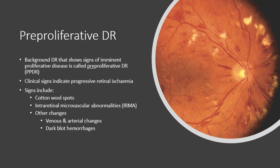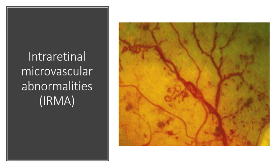We already know about cotton wool spots, but over the next few slides I'll show you IRMA, vessel changes, and dark blot hemorrhages. Intra-retinal microvascular abnormalities — IRMA — are fine irregular red lines that run from the arteries to the venules. They are intra-retinal and do not cross over any major retinal vessels. When you see these tiny changes in the vasculature, this is an indication of pre-proliferative diabetic retinopathy that may progress to proliferative.